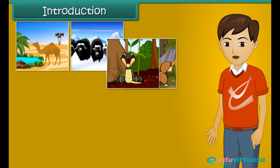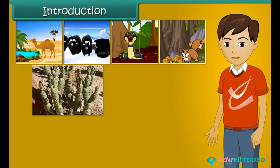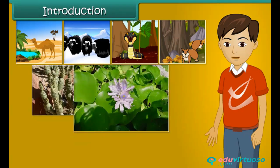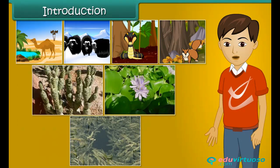Similarly, plants like cactus, water hyacinth, and hydrilla are also different in their physical appearance and behavior. All plants and animals develop different features that help them to survive in their surroundings. Let us learn more about living organisms and their surroundings.